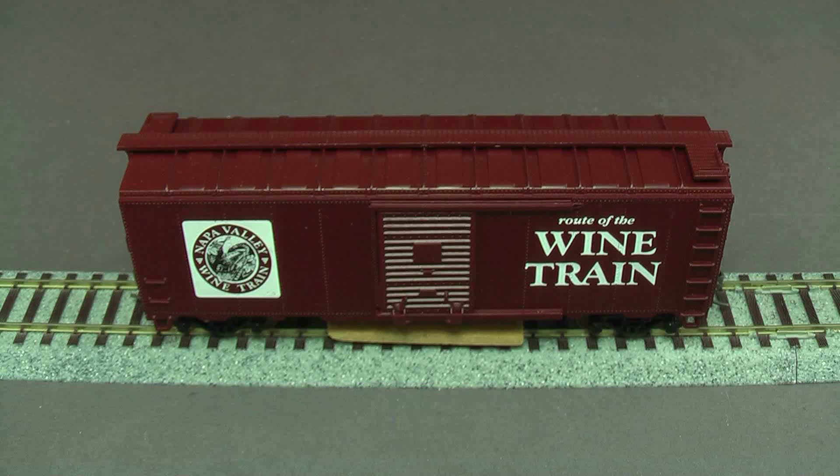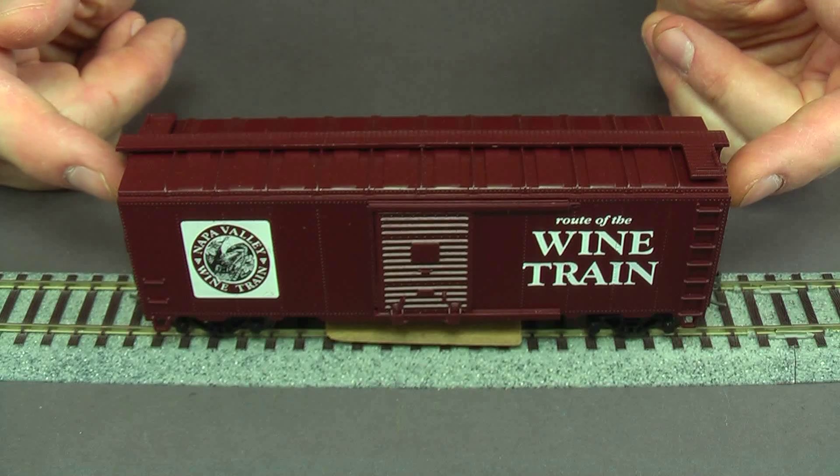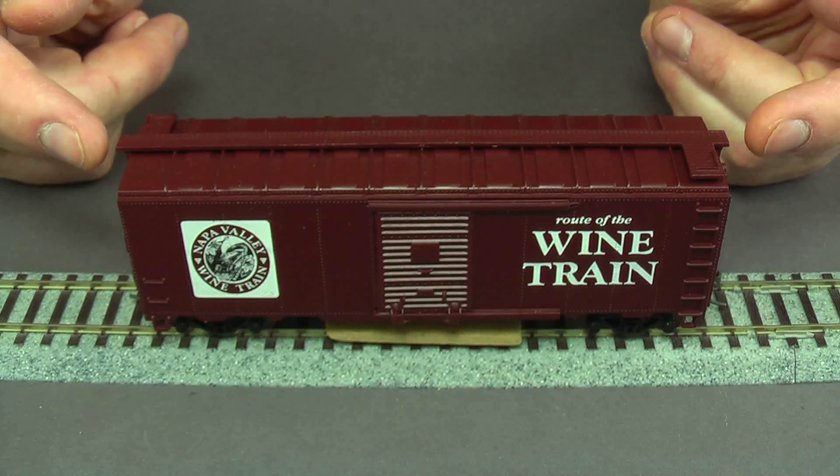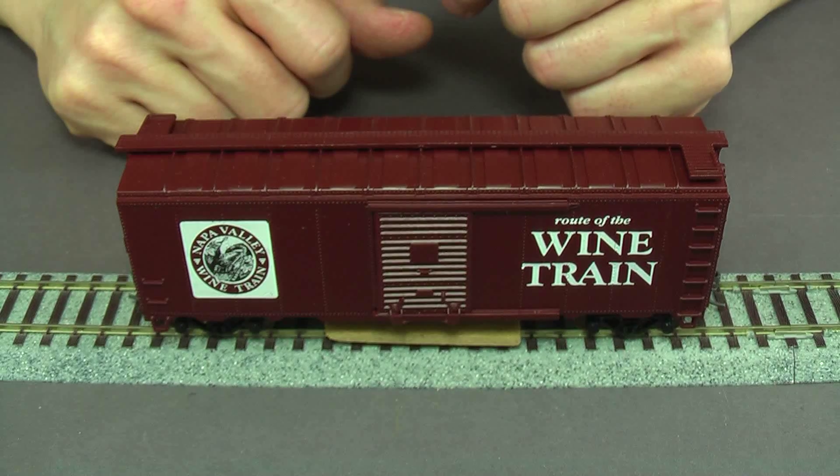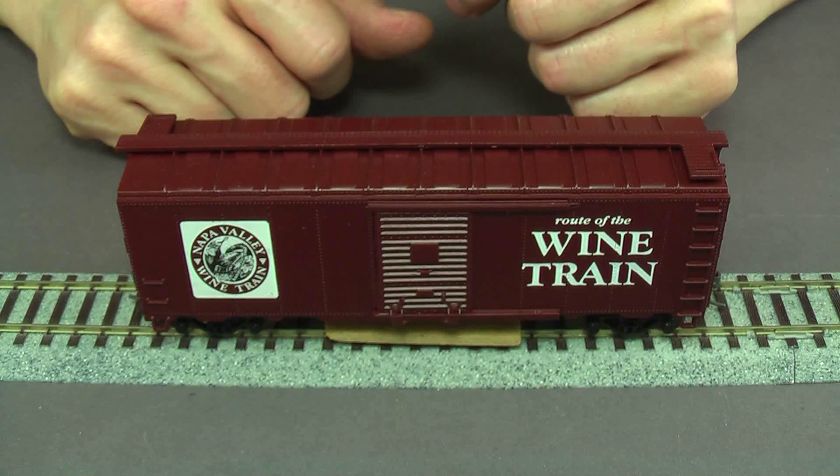It's basically a track cleaning car. Now, it didn't start out as a track cleaning car. It started out as a souvenir boxcar from the wine train, which I, one time when I rode the wine train, I got the little boxcar in the gift shop. But it's kind of, I think it's an Athern blue box, really old, with molded on ladders and everything.